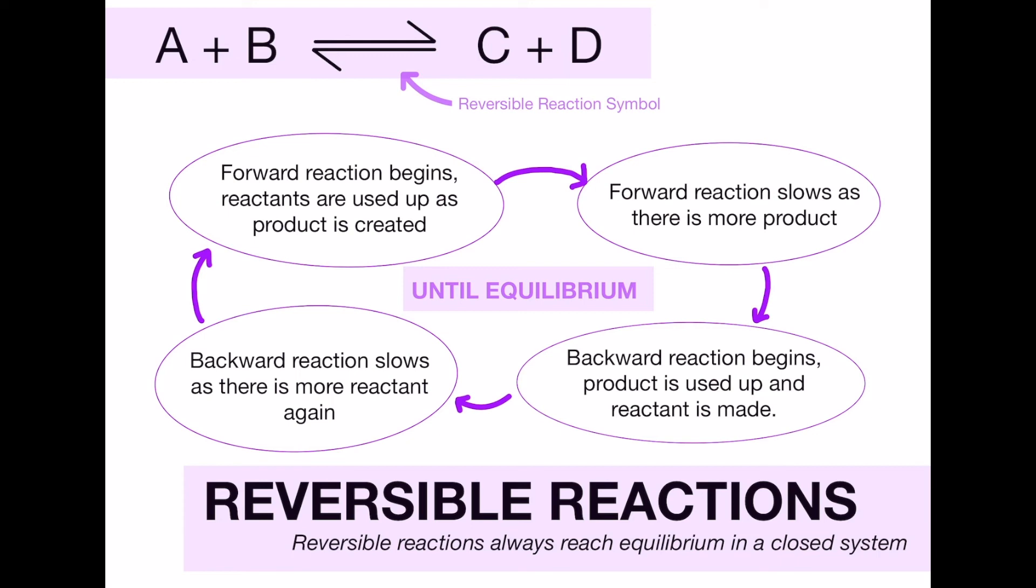That term closed system that I talked about at the start just means that there is nothing being added or no changes being made to the system while it's active, because you can imagine if you think you've finally reached equilibrium and then all of a sudden a load more reactant gets added, there's going to be no longer any equilibrium and it's going to have to start the whole process again, or if at one end the products started to get released as they were being made, there would not be a way to reproduce those reactants if there's no product there anymore.